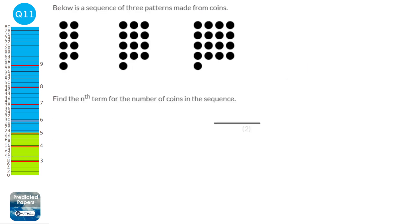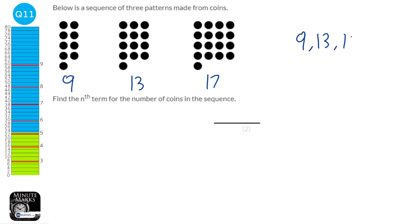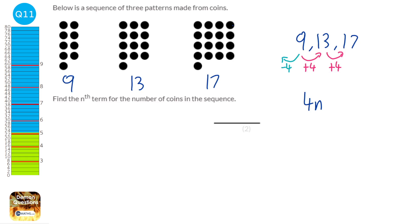When finding nth term from a pattern, it's best to convert the pattern into numbers by counting the dots. Our sequence goes 9, 13, 17 — adding 4 each time, so the sequence involves 4n. Going backwards one step to find the 0th term: 9 minus 4 is 5. The 0th term tells us what to add to 4n, so the nth term is 4n plus 5.